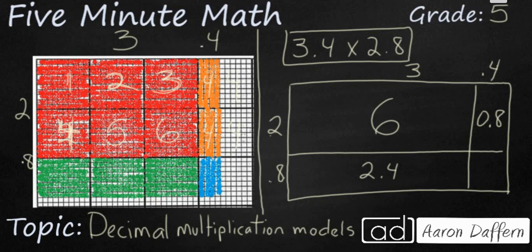And if you count those here, you see you've got 8 tenths and 8 tenths and 8 tenths. So that's 8, 16, 24 tenths or 2.4.